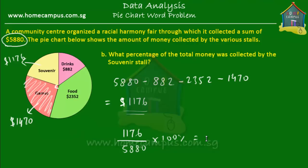If the whole pie is equal to 100%, then the slice representing the souvenir stall's collection is 20% of the whole pie. That's what it means. The third question is: what fraction of the total money was collected by the food stall?